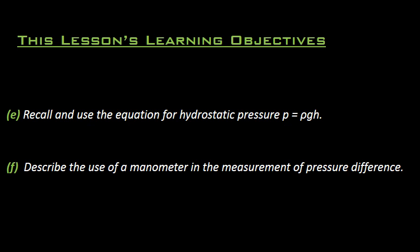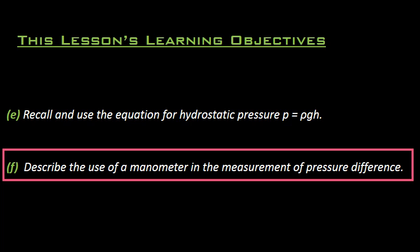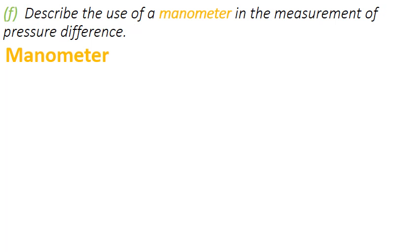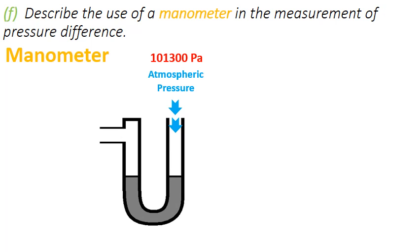Now we will be looking at learning objective F, which says describe the use of a manometer in the measurement of pressure difference. So here we will be discussing manometer, and remember manometer is used for finding out or for the measurement of the pressure of specific gas enclosed in a cylinder.